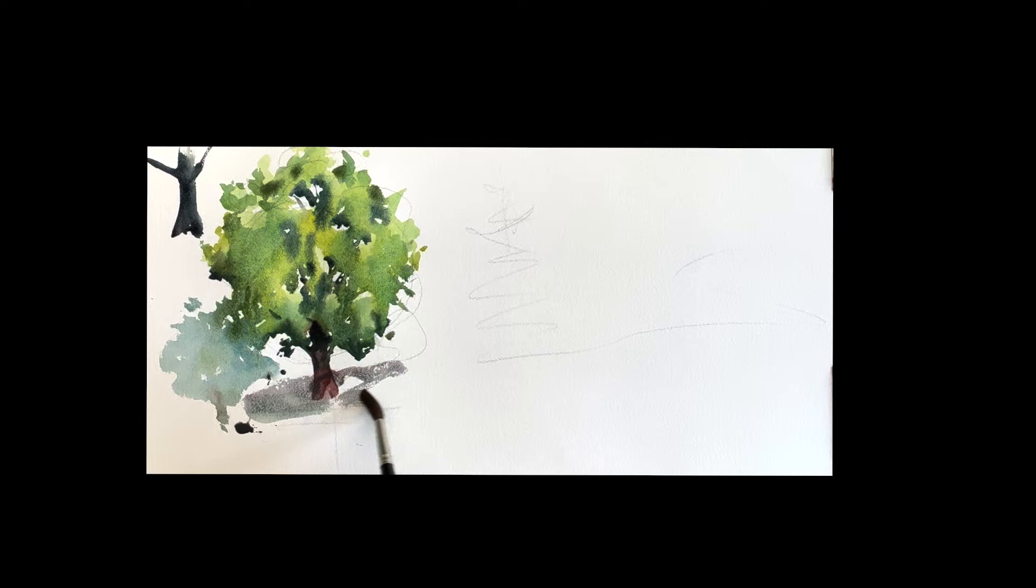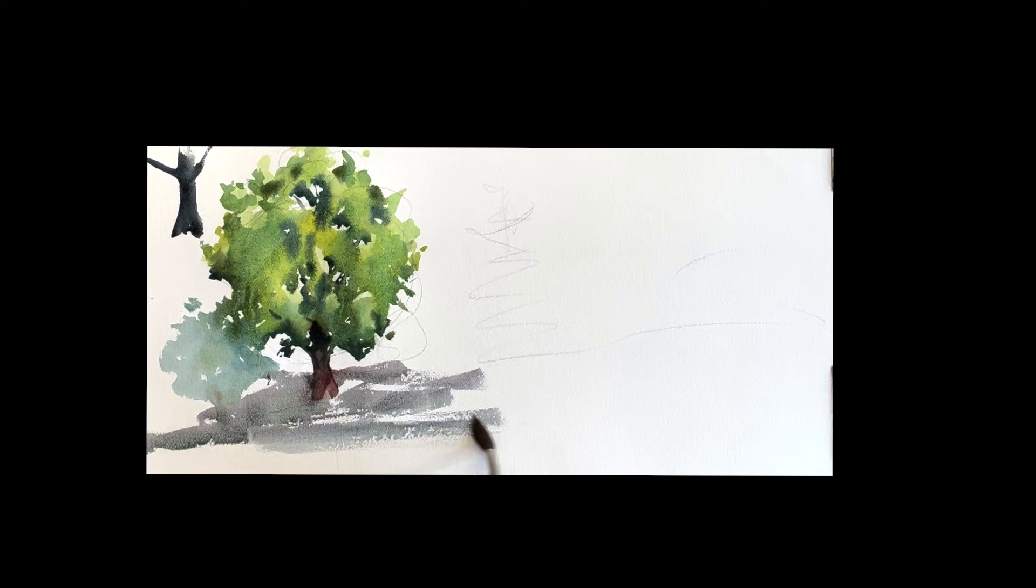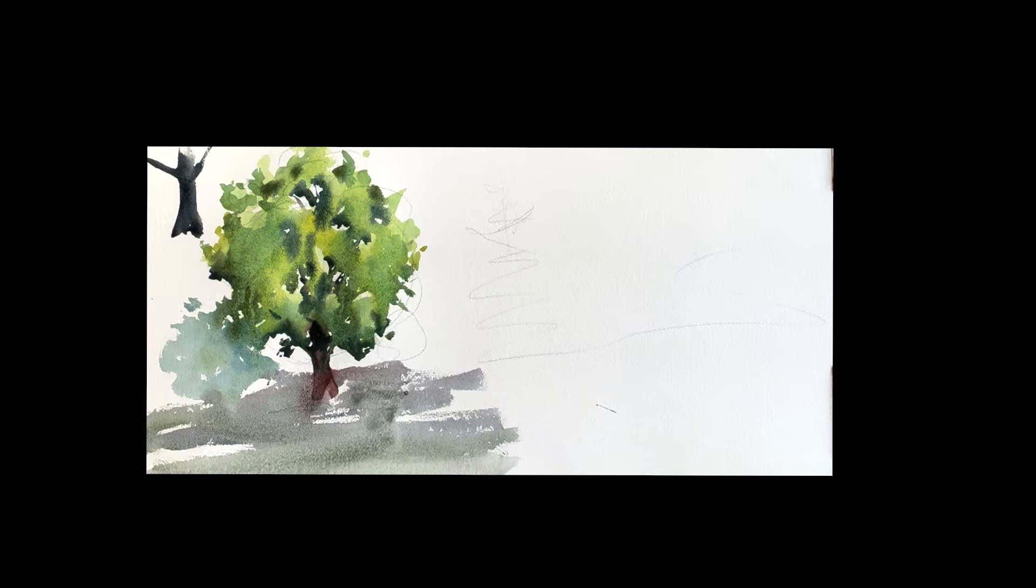All right. And basically then we just get a little bit of a shadow underneath the tree. Just mix up a shadow color. Always good to leave a few lights under there, but that helps to sit the tree down when you do that. Hope you learned something from that. All right. Let's get into this.